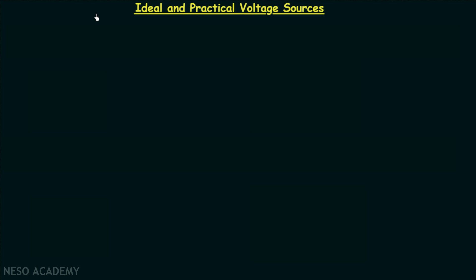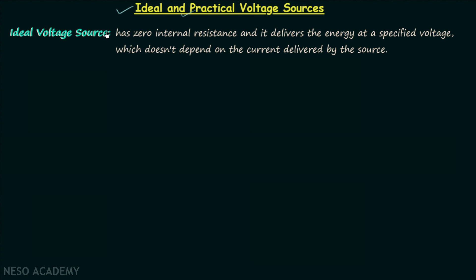In the last lecture we had discussion on dependent and independent sources. Now we will try to understand what is an ideal voltage source and what is a practical voltage source, and we will begin with the ideal voltage source. An ideal voltage source has zero internal resistance — this is a very important point. It delivers energy at a specified voltage, and this specified voltage will not depend on the current delivered by the source.